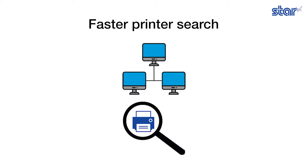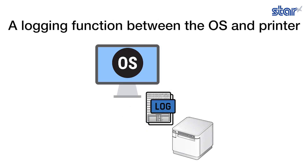Finding nearby printers is much faster and can be done in under one second regardless of connection type. A logging function between the operating system and the printer helps minimize the downtime associated with lengthy debugging processes.